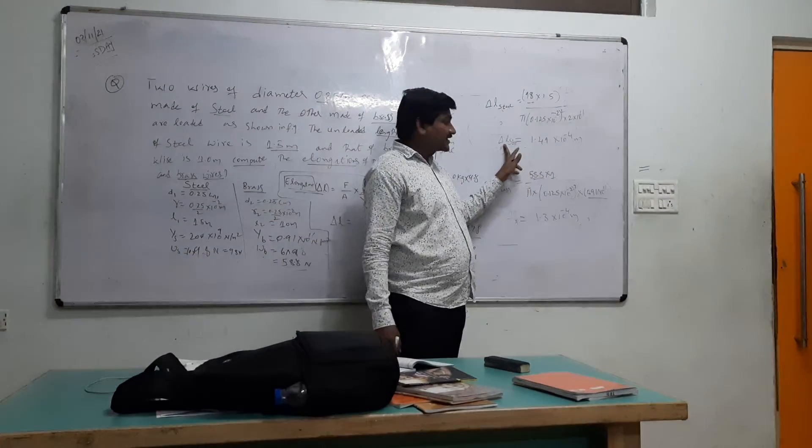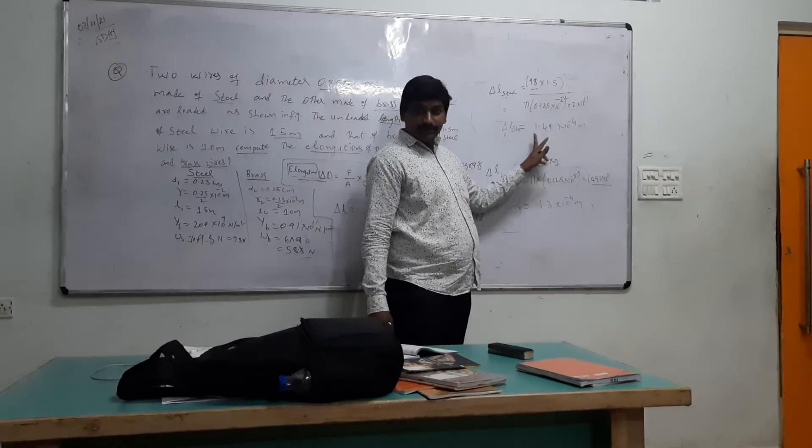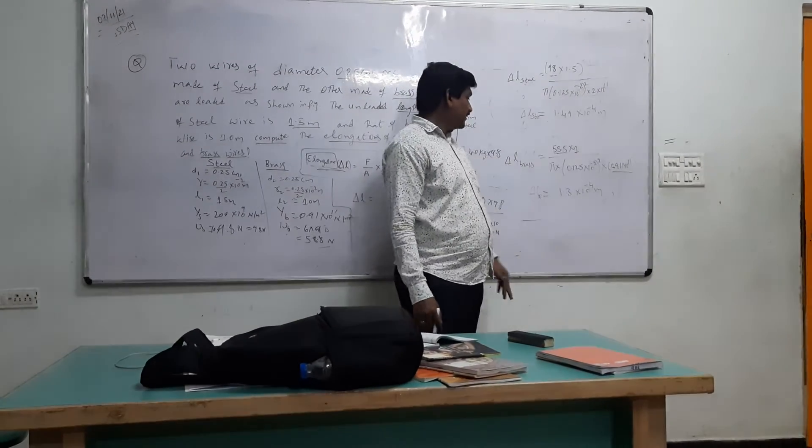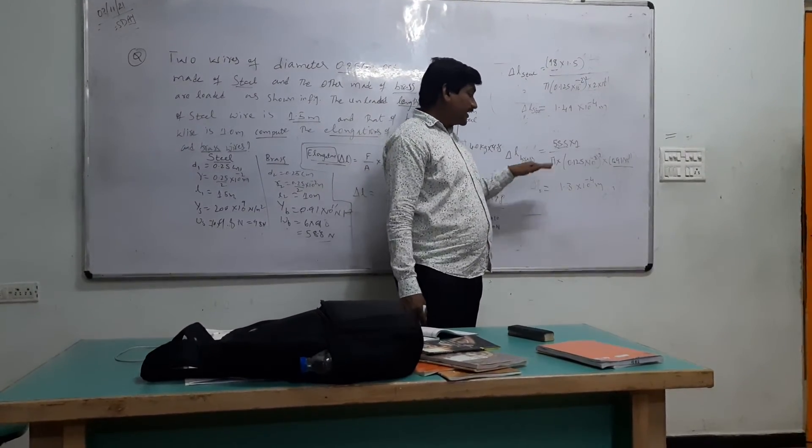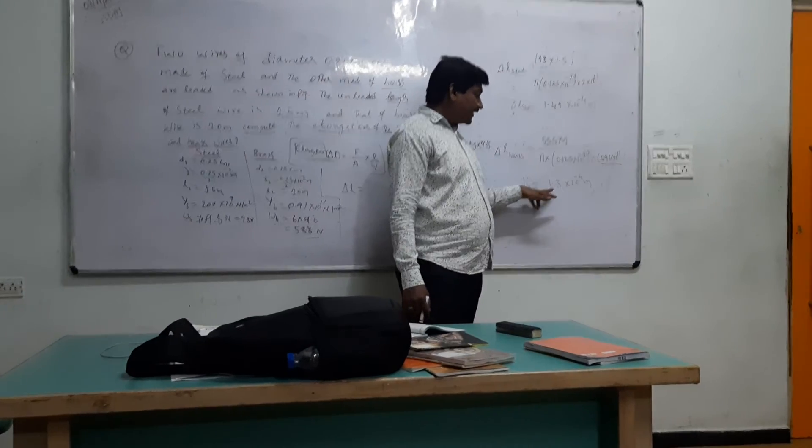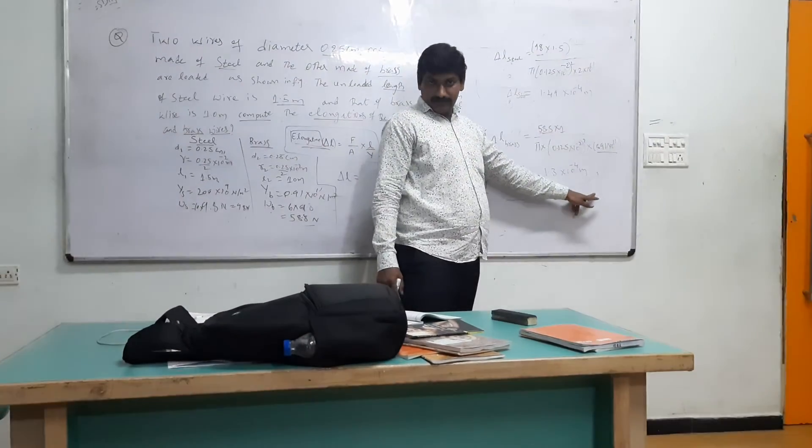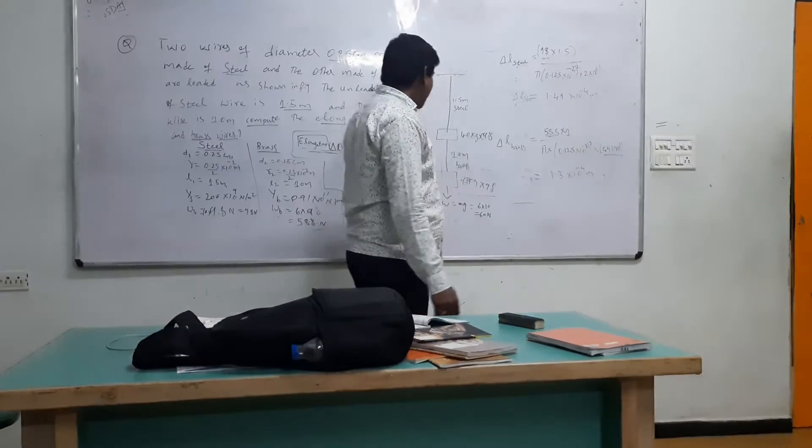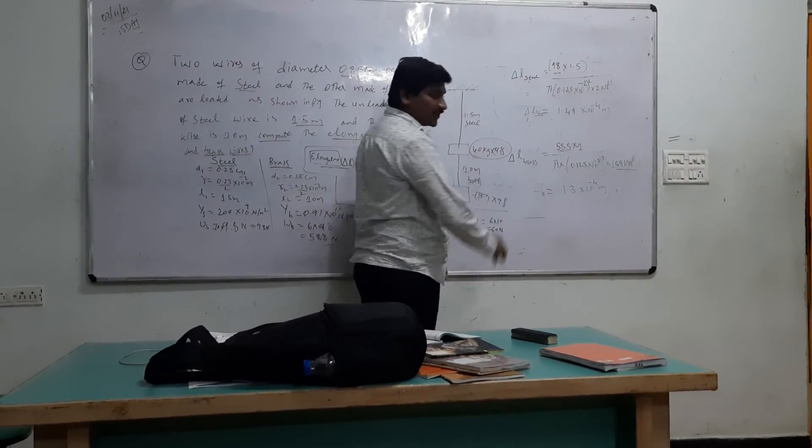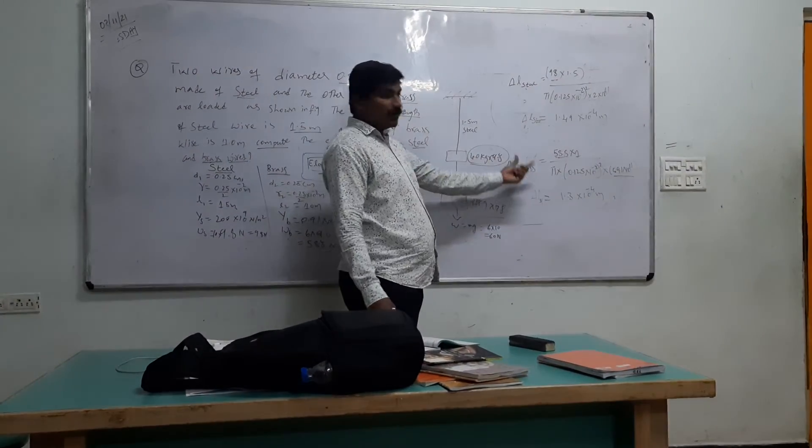the elongation for the steel is 1.49, approximately 1.5 into 10^-4 meters. For the brass, the elongation is 1.3 into 10^-4 meters. Here the important thing is that you should use 9.8 multiplication with the mass that is acting as a load.